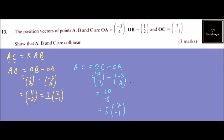So you can see AB and AC have a common direction. We can write AC as 5 times the vector 2, minus 1.